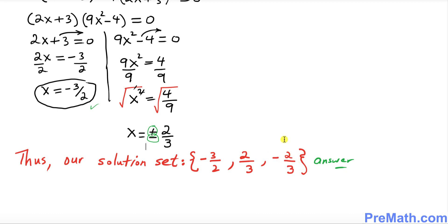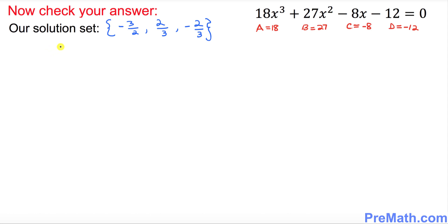Finally, we want to check our answers. In the previous step we already found out our solution set was -3/2, 2/3, and -2/3. I want you to simply add them up, so this is going to be -3/2 + 2/3 + (-2/3).